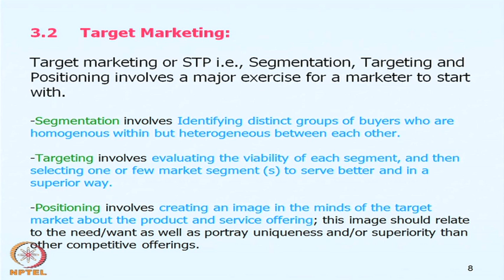Which segment a marketer targets depends upon the viability of the segment. Targeting involves assessing or evaluating the viability of the segment so as to choose that which will give maximum returns. The third exercise is positioning — creating an image of the product or service offering in the minds of the target segment, such that the person begins to identify themselves or their needs with that particular product or brand. It makes them feel 'yes, the product is for me' or 'no, the product is not for me.' Creating this image in the minds of the target market is the act of positioning.